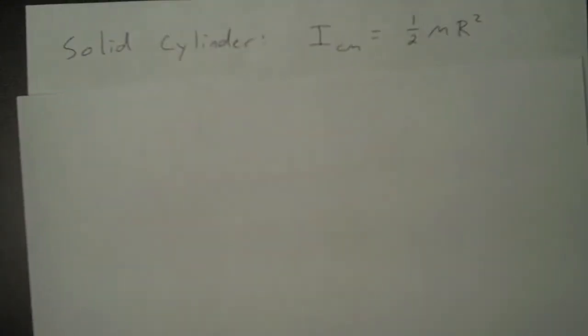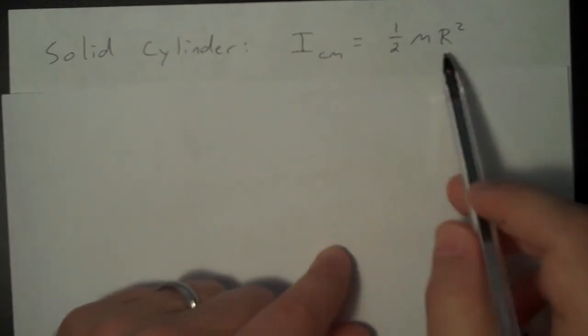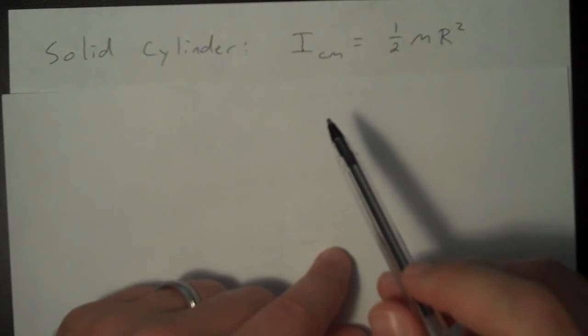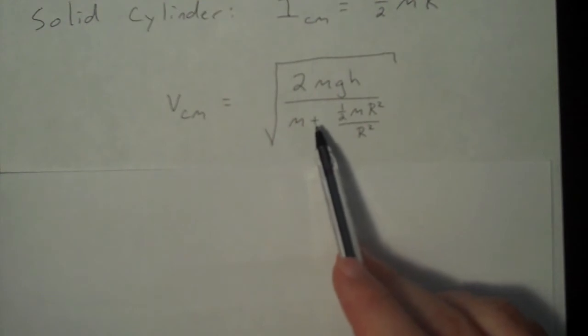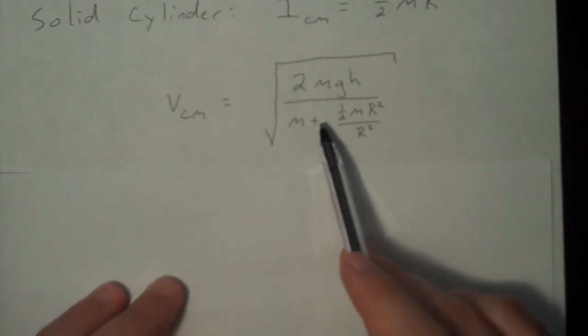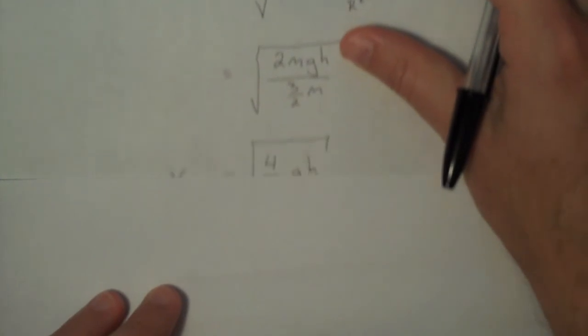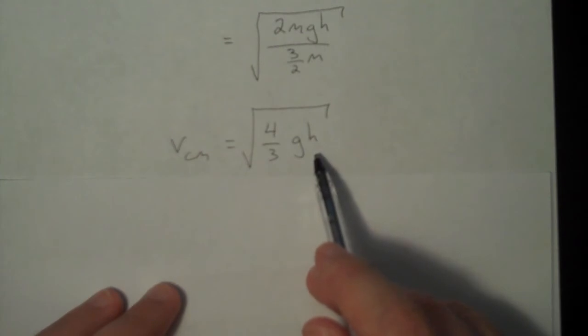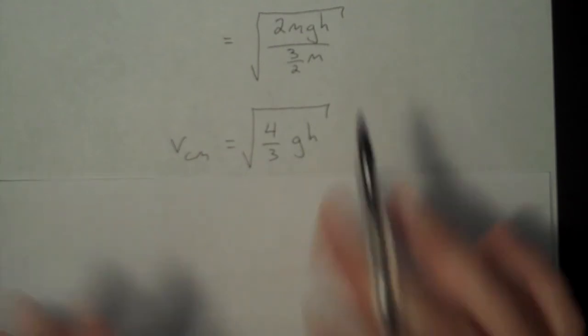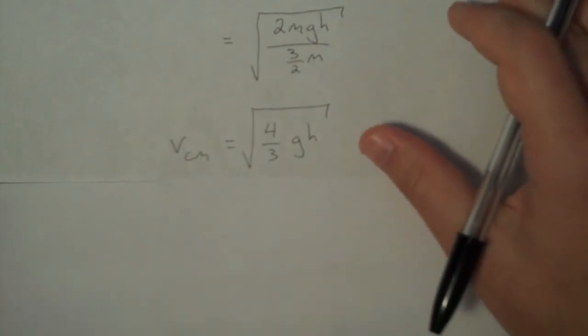We will first consider the solid cylinder. A cylinder is a well-studied geometric shape. So you go to a table and you can easily find what the moment of inertia is for a solid cylinder. And you plug it in to our expression for the speed of the center of mass of the cylinder. And just performing a little bit of cancellation, here is our expression. It's the square root of 4 thirds times gh.